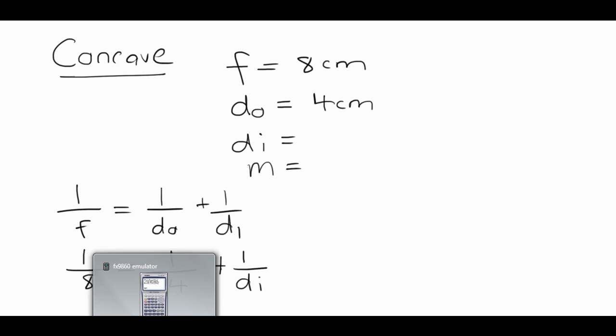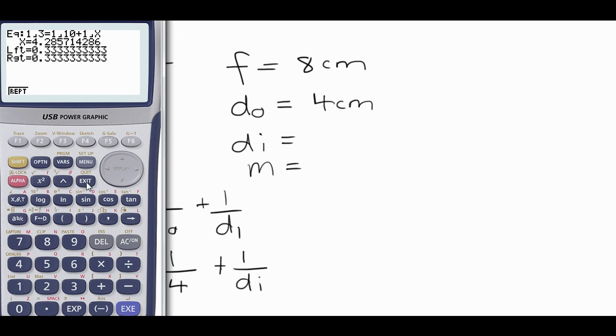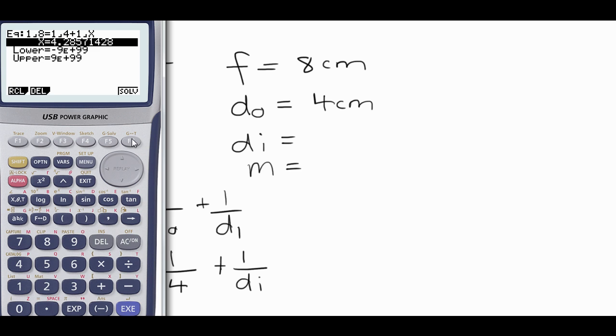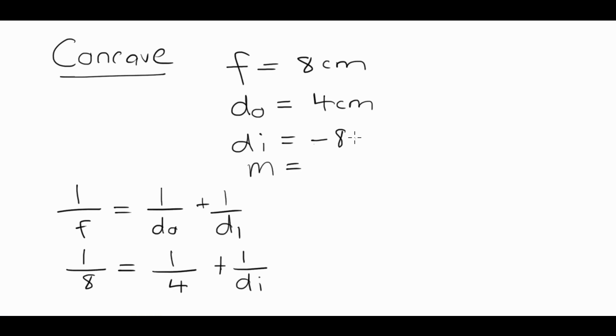Okay, so sticking that into our calculator, 1 over 8 is equal to 1 over 4, plus 1 over x. Okay, so we get an answer of negative 8. So in this case, di is equal to negative 8 cm.